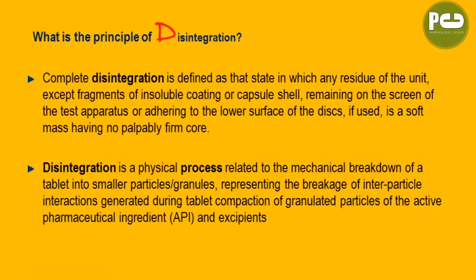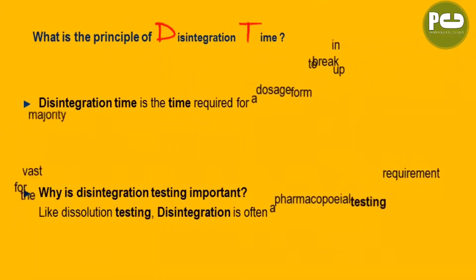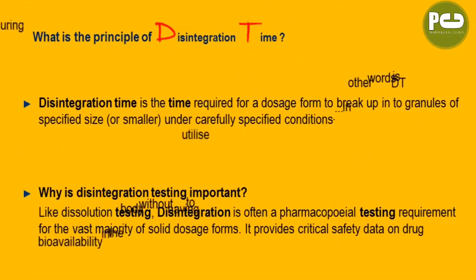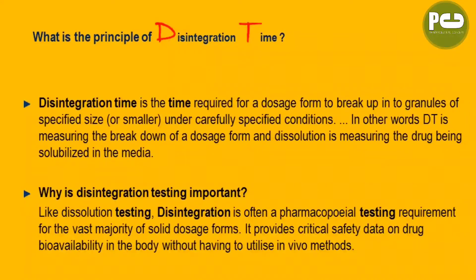Disintegration is a physical process related to the mechanism of breakdown of a tablet into smaller particular granules, representing the breakage of inter-particular interactions during tablet compaction of granulated particles of the active ingredients and excipients. Disintegration time is the time required for a dosage form to break into granules of a specified size under carefully specified conditions. In other words, DT is a measure of the breakdown of a dosage form, and dissolution is measured during solubilization in the media.